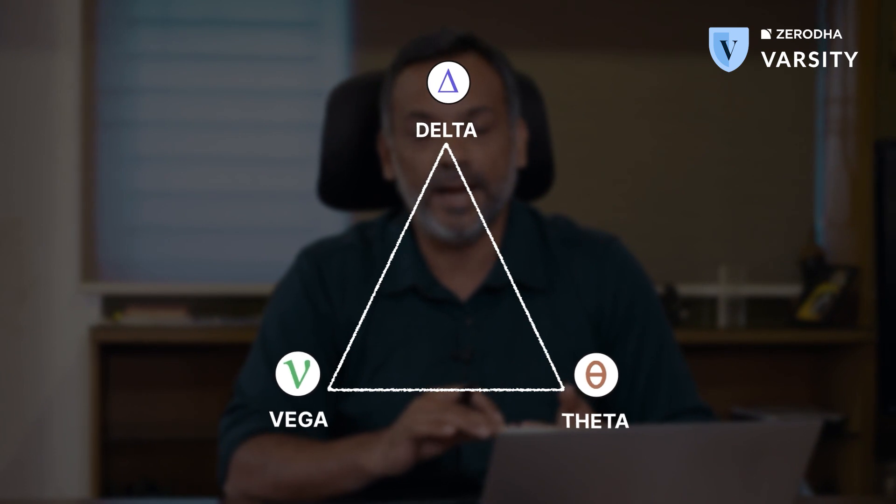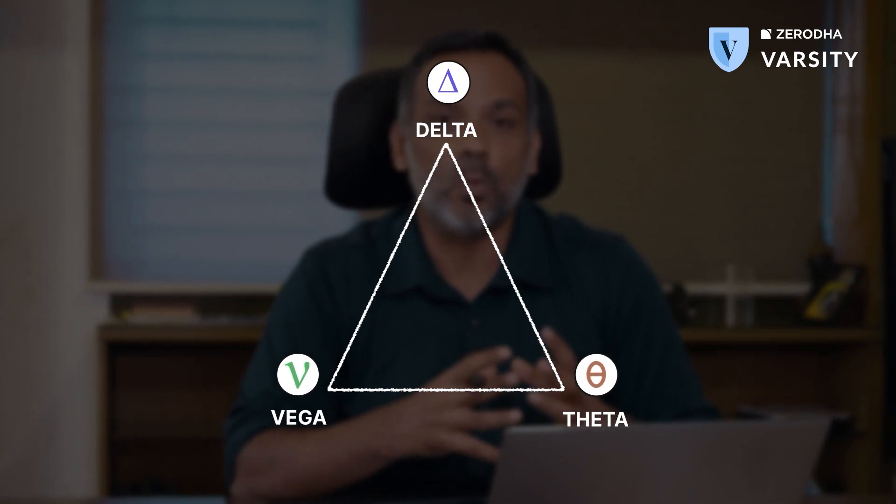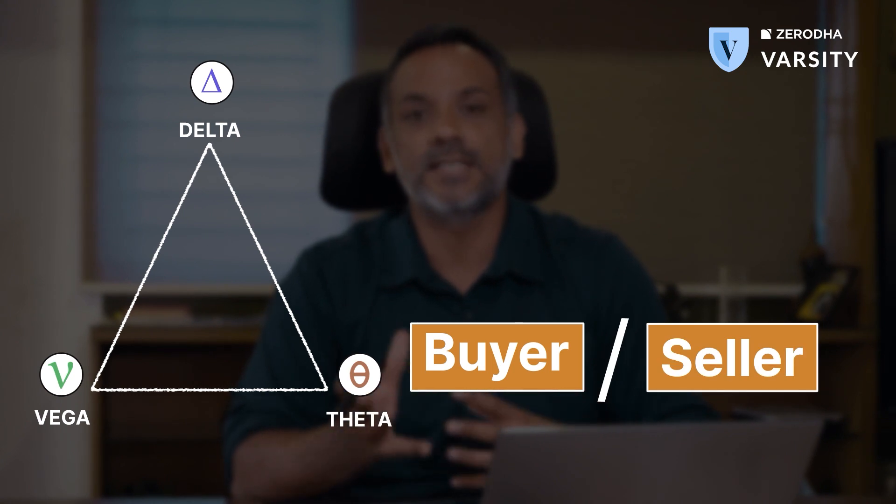None of these three things — delta, vega, and theta — should be looked at in isolation. Whenever you get a trade idea, combine views from all the Greeks — delta, vega, and theta — and then figure out whether you want to be a buyer or a seller of an option. I hope you found this video useful. We will be back with another market-related video soon.